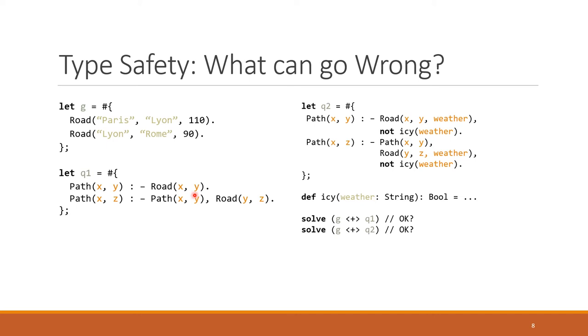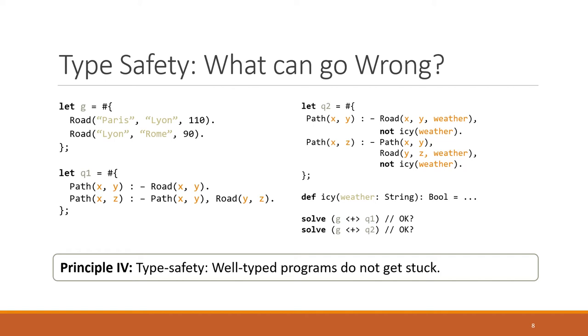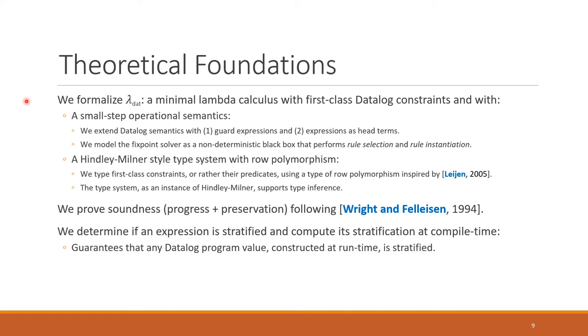In both cases, the answer is no, because if we consider g, we can see that road facts have three arguments. But down here, there's an assumption that road facts only have two arguments. So the composition of these two programs makes no sense. Similarly here, we can see that here roads do take road facts to take three arguments. But calling this icy function, there's assumption that this is the weather, which should be a string, apparently. But here we can see it's an integer. So this composition here is also meaningless. So what we want is to have a type system that can ensure that such programs are rejected, so that we can be sure that if a program is well typed, it will not get stuck at runtime.